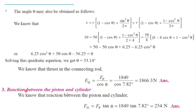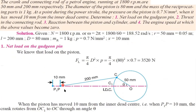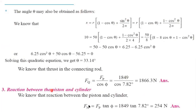The third quantity is the reaction between piston and cylinder, which is Fn — the force acting on the cylinder walls. The formula is Fn = Fp·tan(phi). We already know Fp and phi, so we can easily calculate Fn.